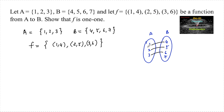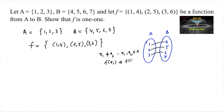Clearly, no two distinct elements of A have the same image. That is, for x1 ≠ x2, where x1 and x2 belong to set A, their images are different — f(x1) ≠ f(x2). Therefore, f is one-to-one.